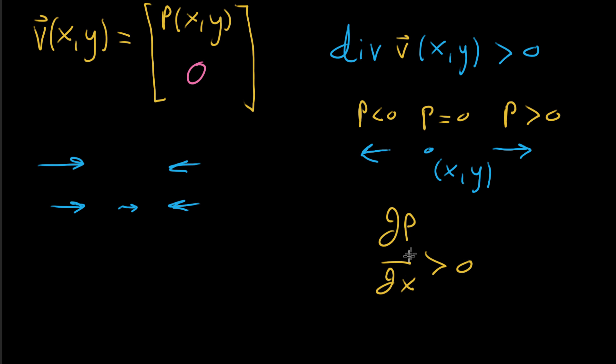And if that seems a little unfamiliar, if you're not sure how to think about partial derivatives of a component of a vector field, I have a video on that, and you can take a look and refresh yourself how you might think about this partial derivative of p with respect to x. And once you do, hopefully it makes sense why this specific positive divergence example corresponds with a positive partial derivative of p.